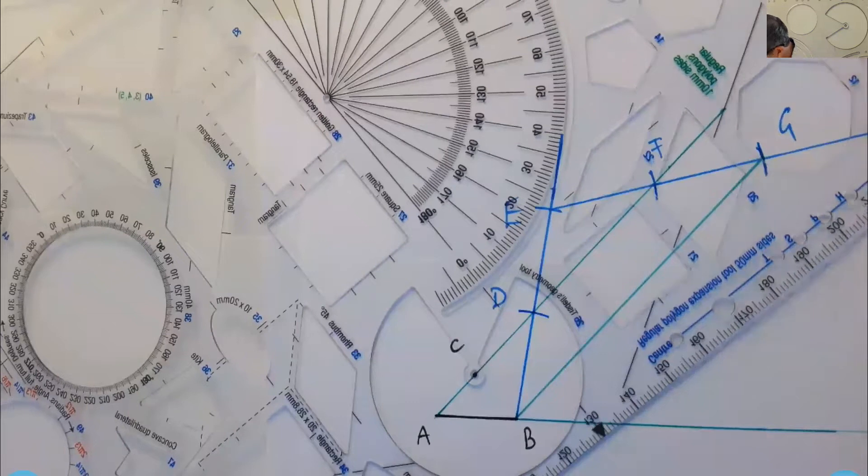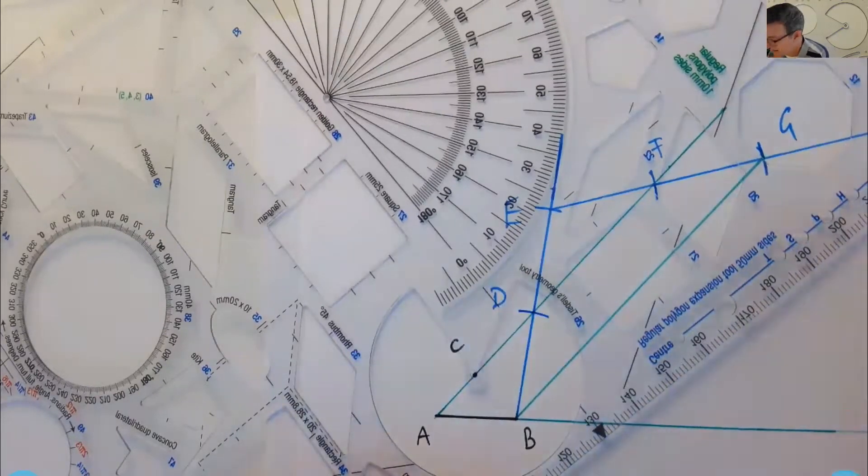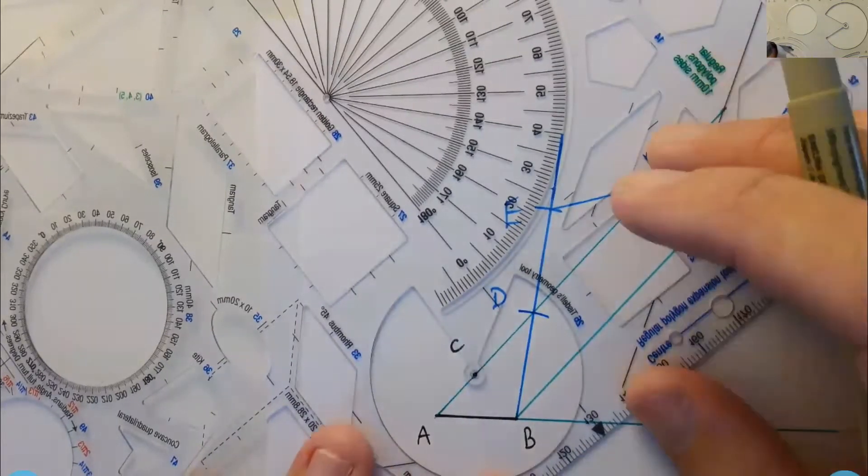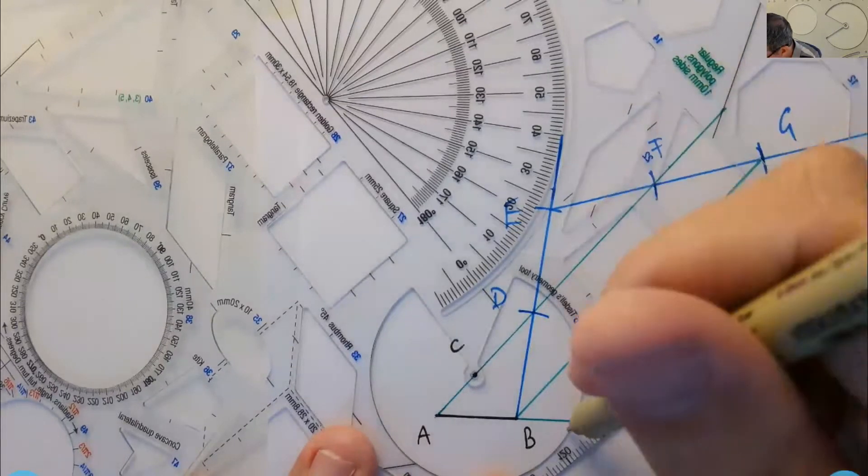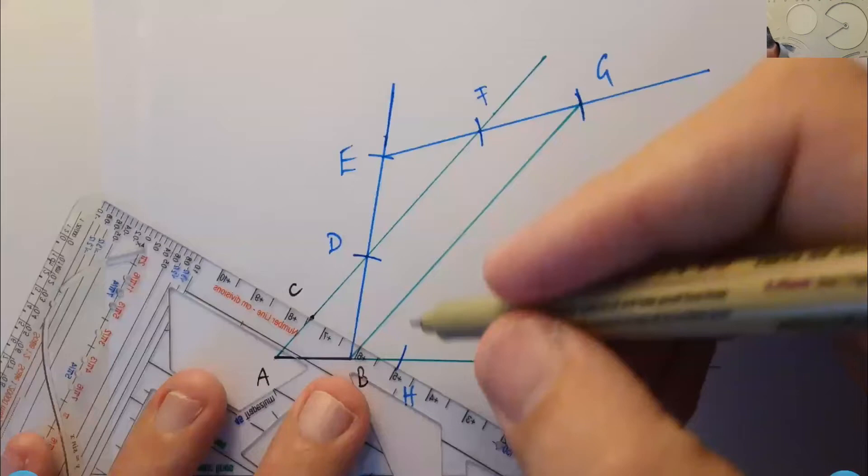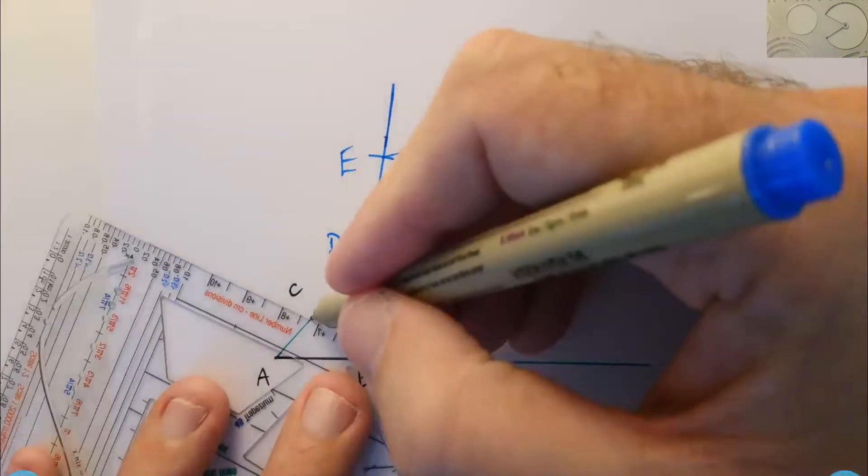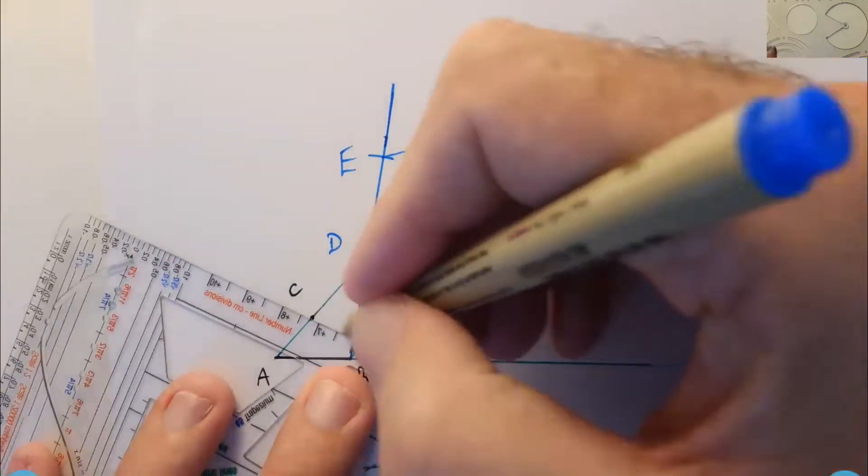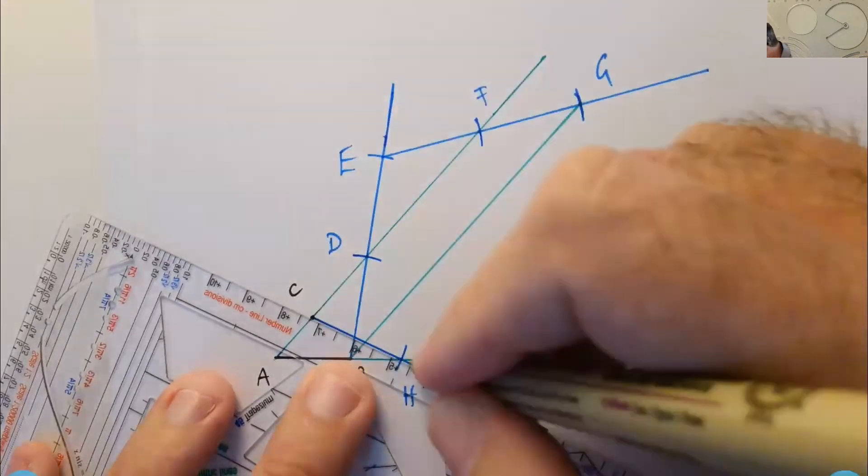So let me put the center point on C. And then I'm going to cut the extended line AB down there. So let's call that H. And I'm going to do exactly what I did before. I'm going to draw an extended line through there.